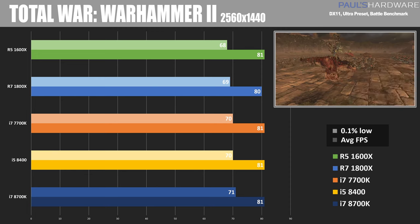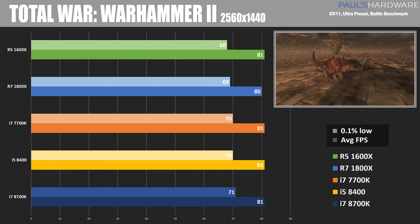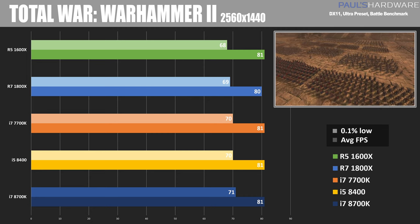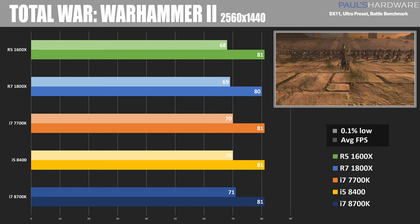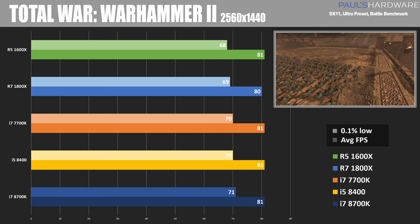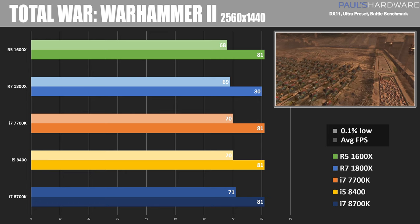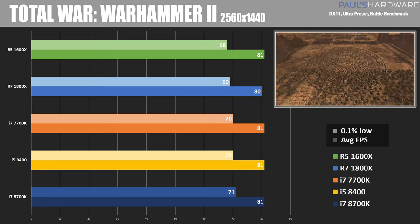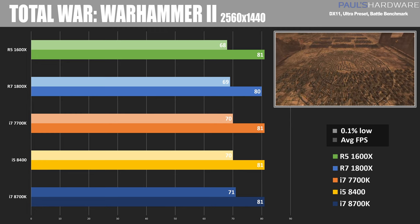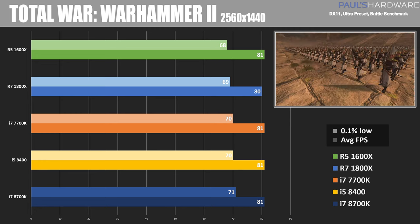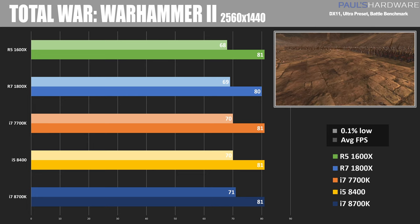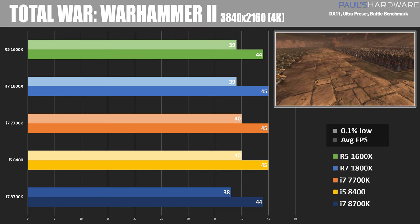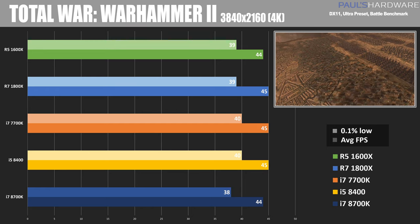Switching over to DirectX 11, starting with Total War Warhammer 2 — a fairly new title and new addition to my test bench suite. It really hasn't shown much variance between any of these platforms at all; this is clearly not a CPU-bound game. At 1080p we scored about 115 FPS everywhere with roughly the same 0.1% lows; at 1440p about 81 FPS no matter what CPU is paired up with similar 0.1% lows around 70; and at 4K about 44 to 45 FPS with 0.1% lows just short of that at 38 to 40.